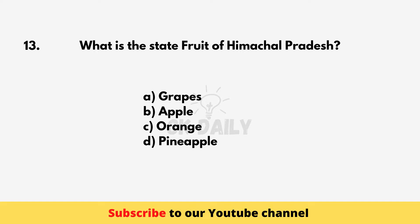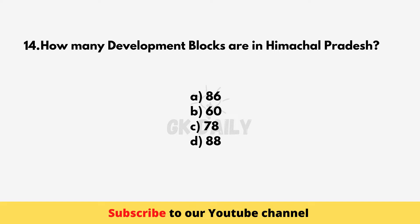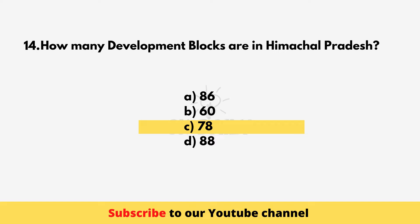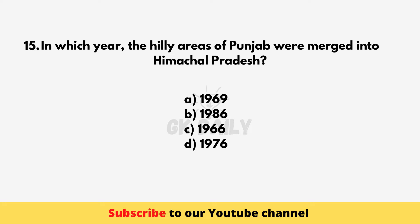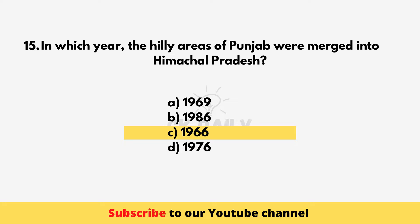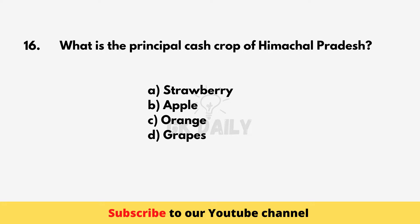What is the state fruit of Himachal Pradesh? Apple. How many development blocks are in Himachal Pradesh? 78. In which year were the hilly areas of Punjab merged into Himachal Pradesh? 1966. What is the principal cash crop of Himachal Pradesh? Apple.